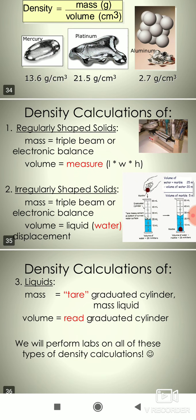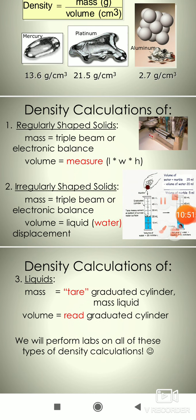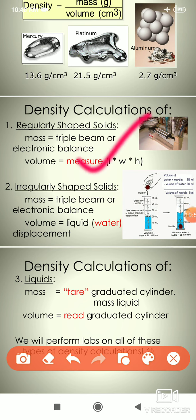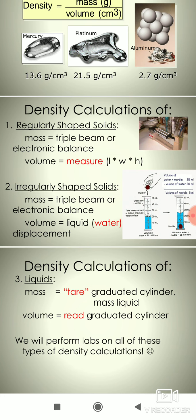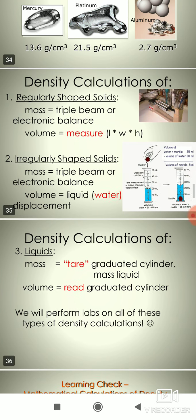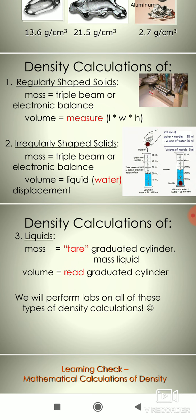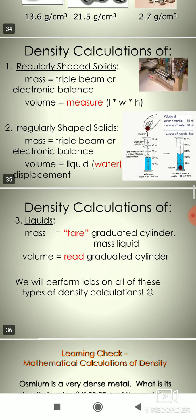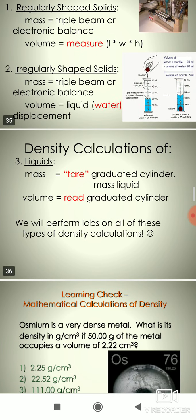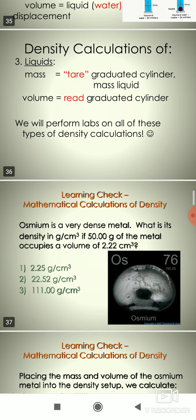To calculate the density of a substance, we can use the methods we have discussed. Density is mass per unit volume, and its units are kg per m³ and gram per cm³.